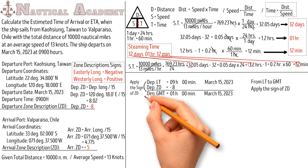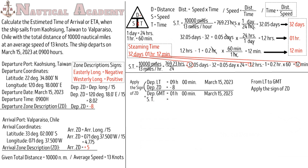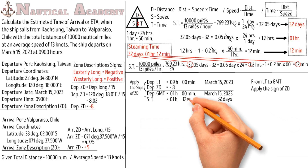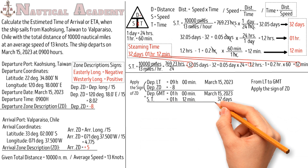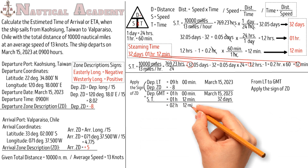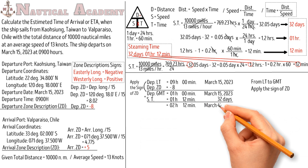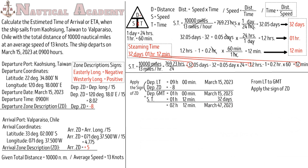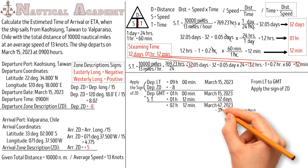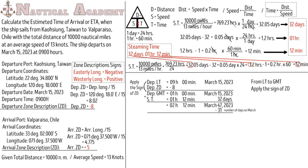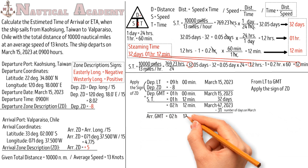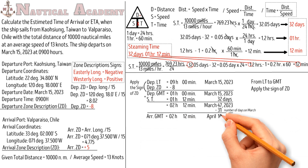Next, we will add the steaming time to the departure Greenwich Mean Time in order to find the arrival Greenwich Mean Time. Our steaming time from Kaohsiung, Taiwan to Valparaiso, Chile, is 32 days, 1 hour, and 12 minutes. So the arrival Greenwich Mean Time will be at 02 hours and 12 minutes on March 47, 2023. But for the month of March, the number of days is only 31 days, so we will subtract 31 from 47. The arrival Greenwich Mean Time is now at 02 hours and 12 minutes on April 16, 2023.